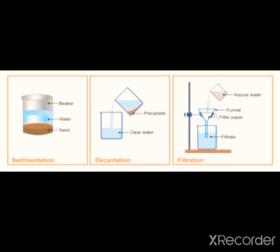The process of settling down of insoluble particles is known as sedimentation. The process of pouring out the clear liquid without disturbing the sediment, as shown in figure 2, is known as decantation. 'Decant' means taking out of the container. So decantation is the process in which pure liquid is poured out without disturbing the solid particles. This method is used for heterogeneous mixtures of solid-liquid where the solid component is insoluble and heavier than the liquid, for example sand and water.